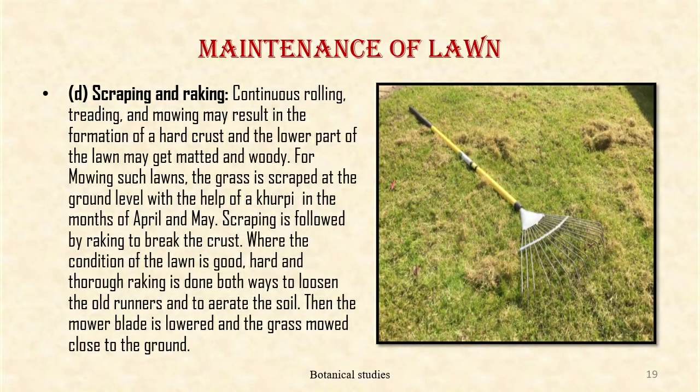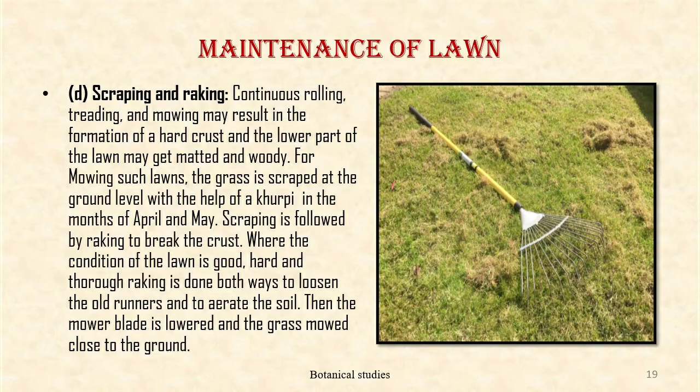Scarifying and Raking: Continuous rolling, treading and mowing may result in the formation of hard crusts and the lower part of the lawn may get matted and woody. For renovating such lawns, the grass is scraped at the ground level with the help of a khurpi in the months of April and May. Raking is done both ways to loosen the old runners and the soil and to aerate the soil. Then the mower blade is lowered and the grass mowed close to the ground.